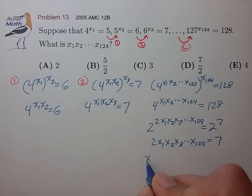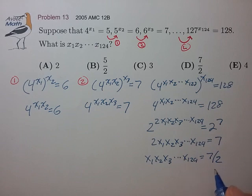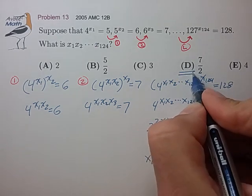Divide out by 2, gives us our final answer, 7 over 2, choice D.